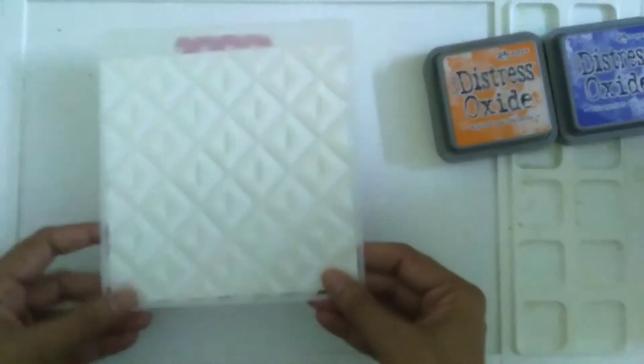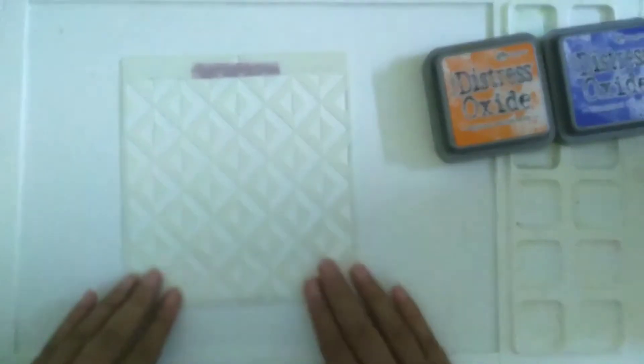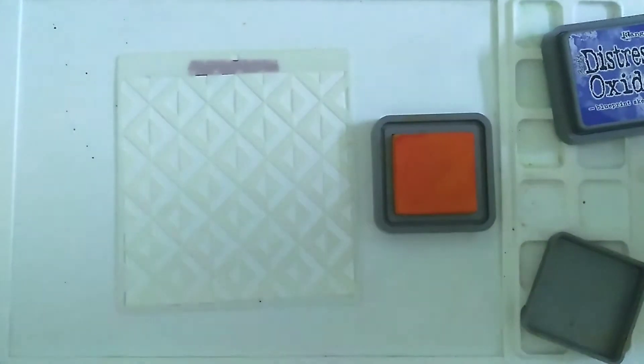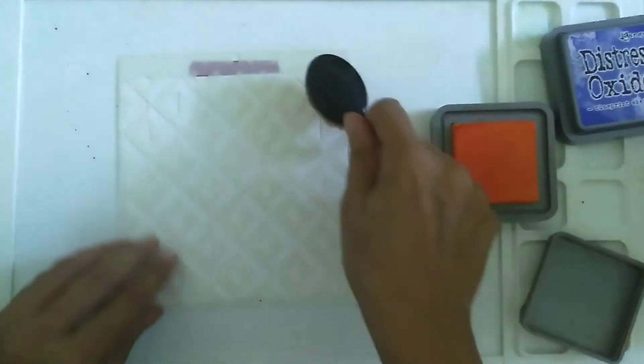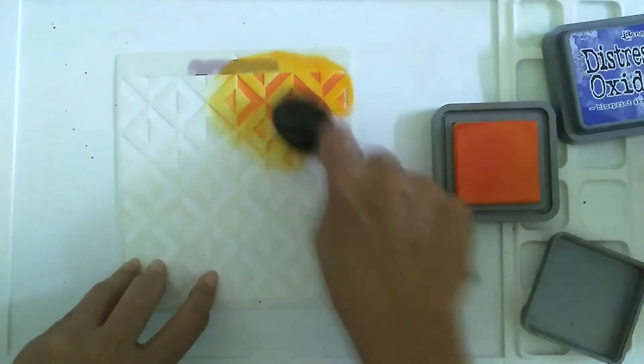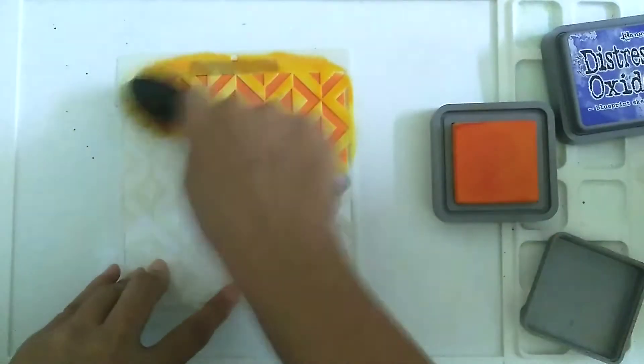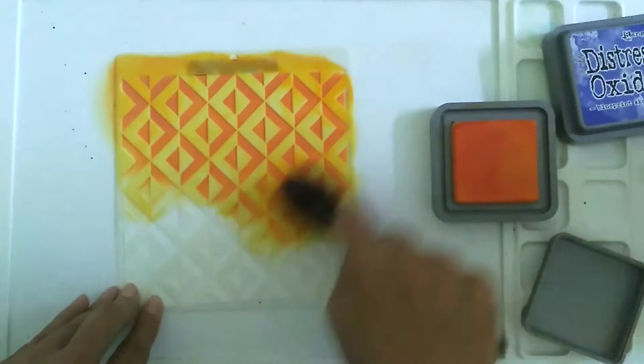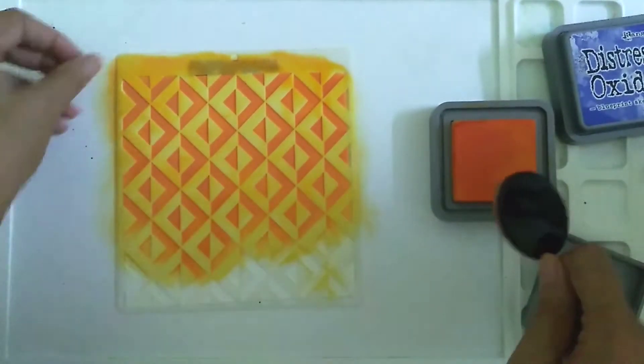Then I'll just flip the stencil over. The washi tape ensures that the paper won't move while I'm doing the inking. You can also apply some repositionable adhesive to the back of the stencil if you wish. Just make sure that your stencil is placed firmly. Now I'm using a blending brush and some spiced marmalade ink to ink the entire background. This is a process which goes very fast, especially if you use distress oxide inks because they're so easy to blend.